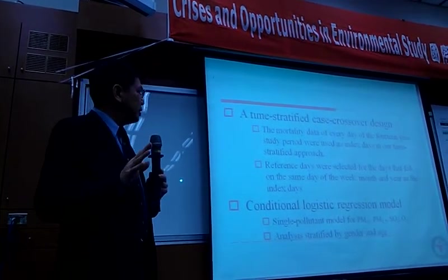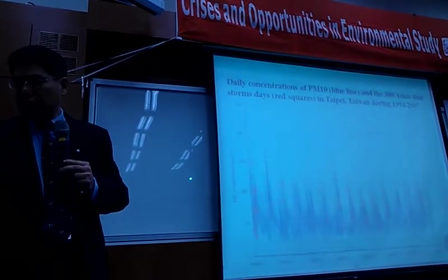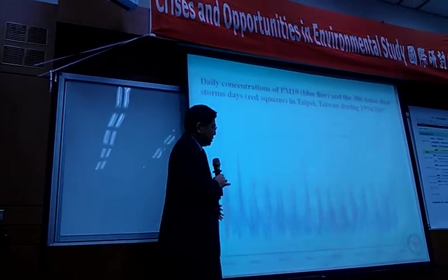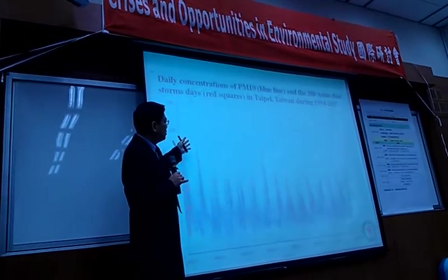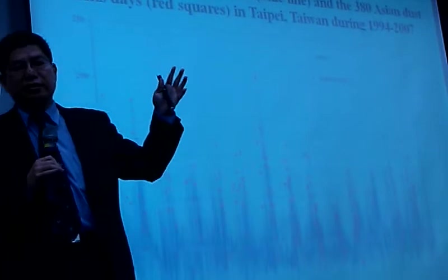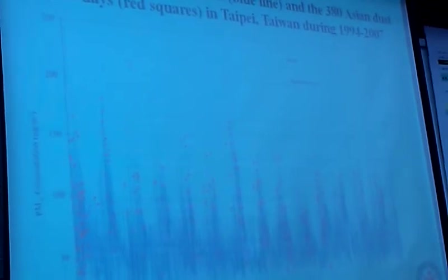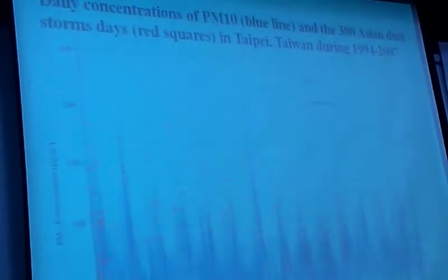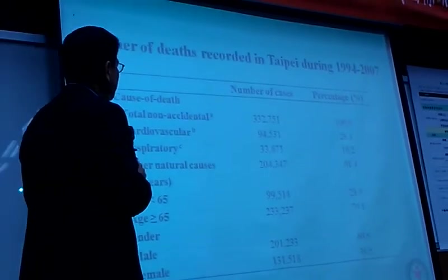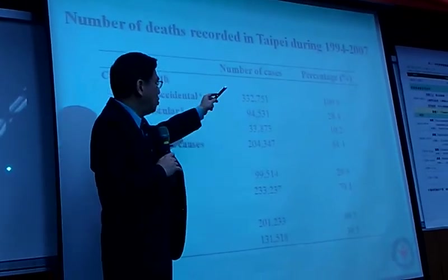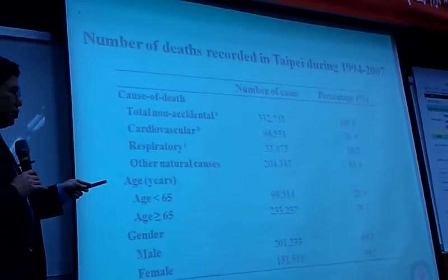We used a time-stratified case-crossover design and conditional logistic regression models to quantify this. If you look at the graph, over 14 years the highest concentrations of PM10 always coincide with Asian dust storms in Taipei — the red dots are Asian dust storms and the blue line is our PM10 measurement. That's not a coincidence. We looked at around 33,000 deaths and tried to quantify how these deaths relate to environmental changes.